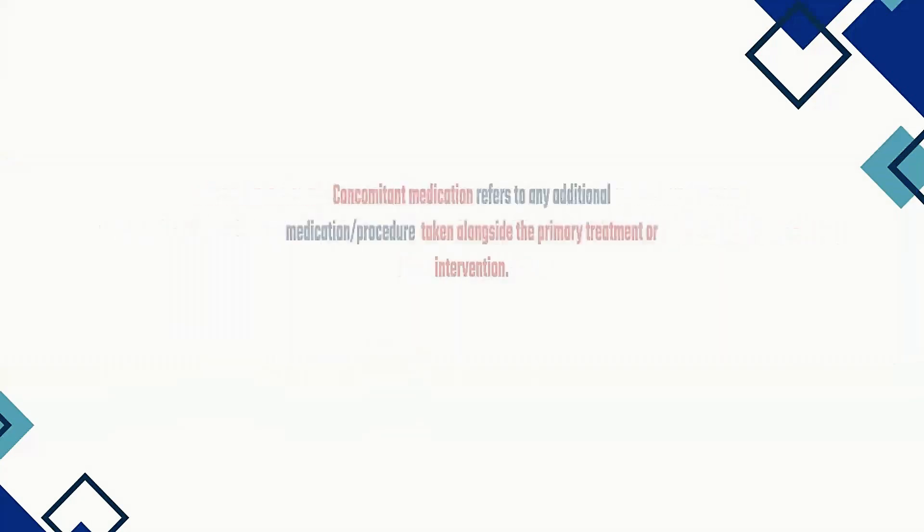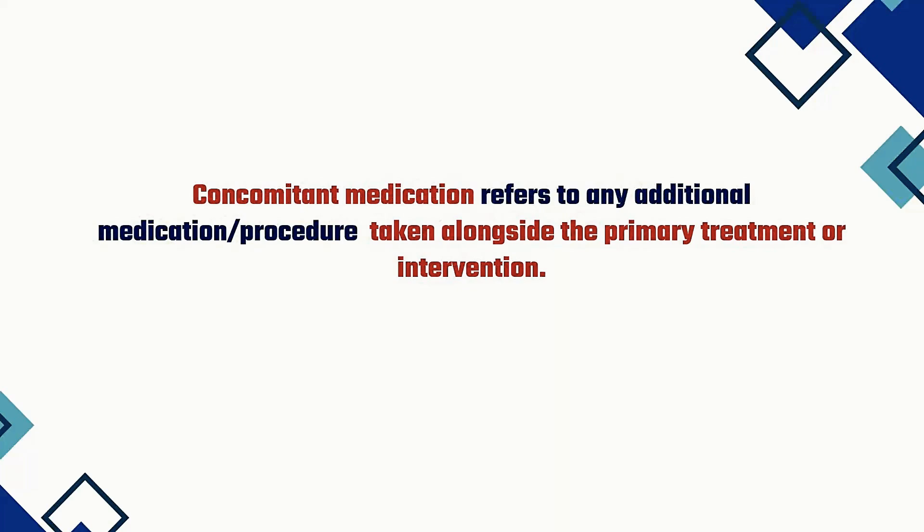So what is concomitant medication? Concomitant medication is any additional medication or any procedure apart from your study drug which was given to the subject. For example, if you are doing an oncology study, apart from the oncology drug, any other drug the subject is taking or the doctor has prescribed to the subject — that medication we call concomitant medication. We give that other medication because during the clinical trial the subject may experience adverse events, or they may have a past history of using some medication and they continue to use those medications.